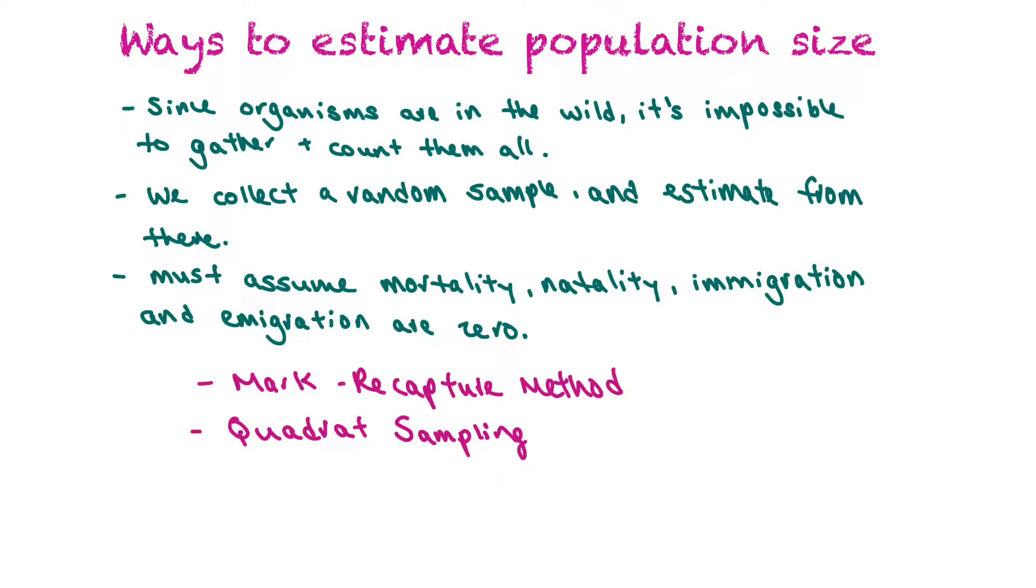Now scientists are interested in estimating the size of populations. And that's done through a variety of different methods depending on the type of population you're trying to estimate. Because organisms are in the wild it's impossible to gather and count them all. So scientists will collect a random sample and will estimate from that sample how big the population potentially could be.